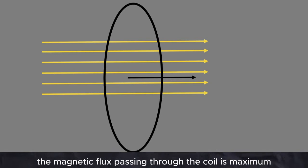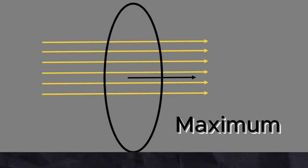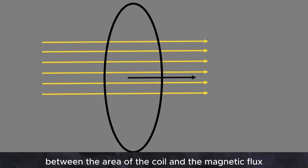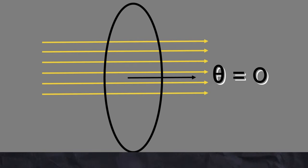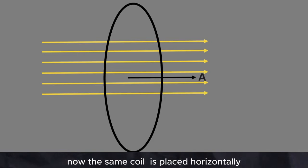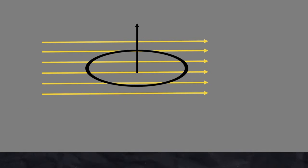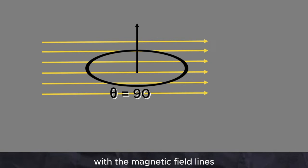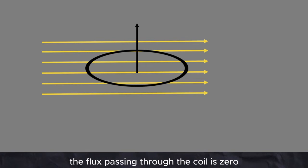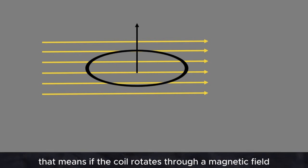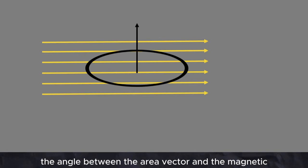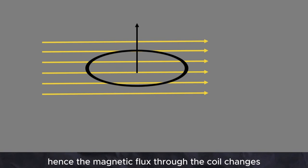If the coil is in a vertical position, the area of the coil is represented by this black vector. In this position, the magnetic flux passing through the coil is maximum, and the angle between the area vector of the coil and the magnetic flux comes out to be zero. Now if the same coil is placed horizontally, the area vector makes an angle of 90 degrees with the magnetic field lines, and the flux passing through the coil is zero.